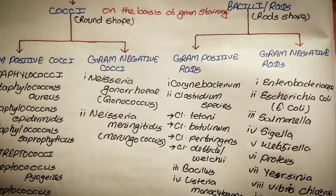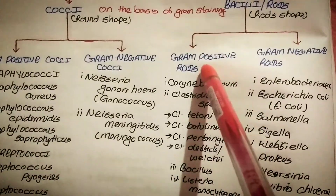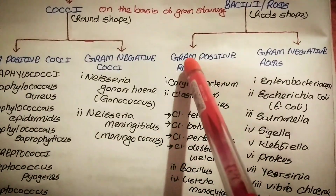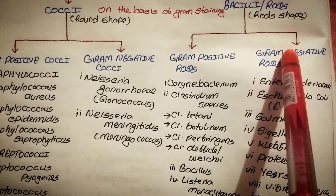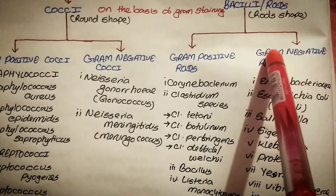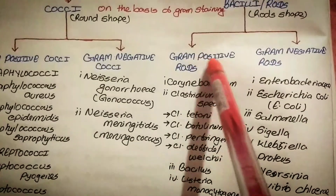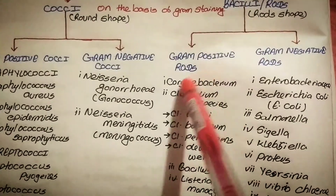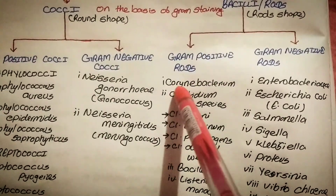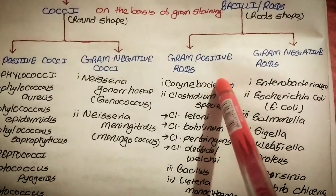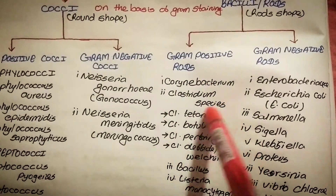Now, bacilli. Bacilli is also classified on the basis of Gram staining into two types: gram-positive bacilli or rod, and gram-negative bacilli or rod. Inside gram-positive bacilli there is Corynebacterium species and Clostridium species.